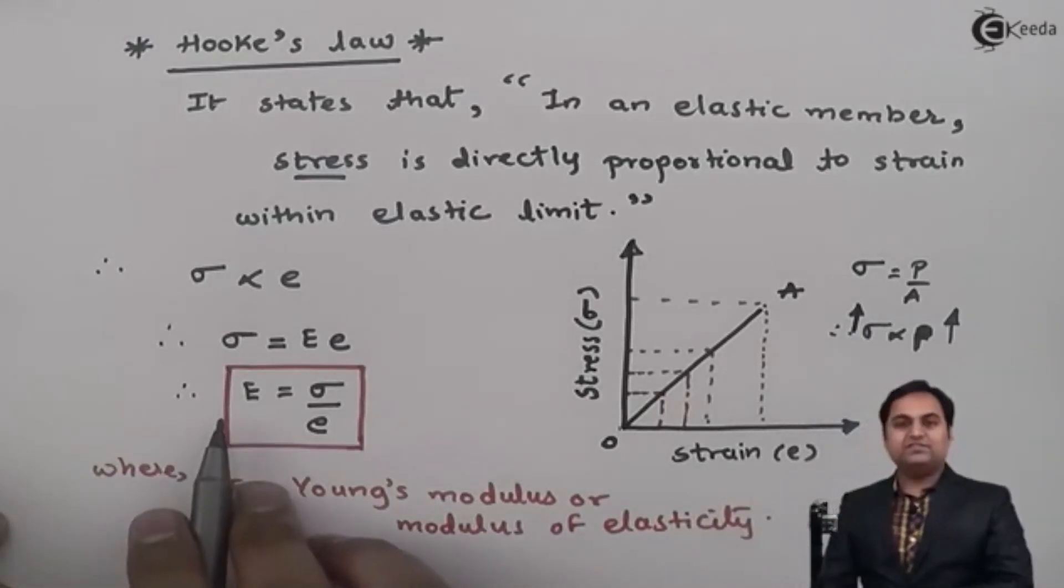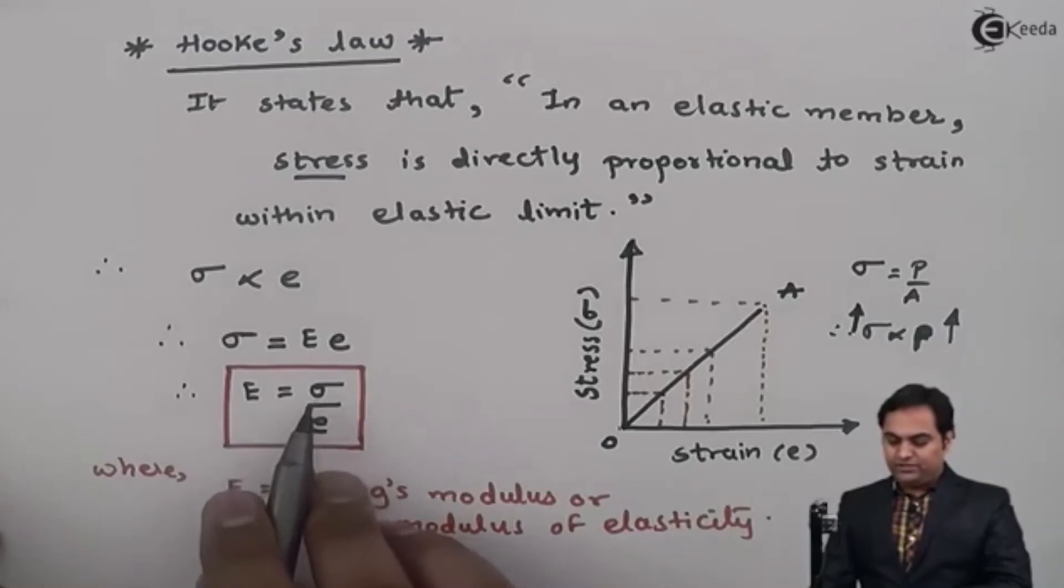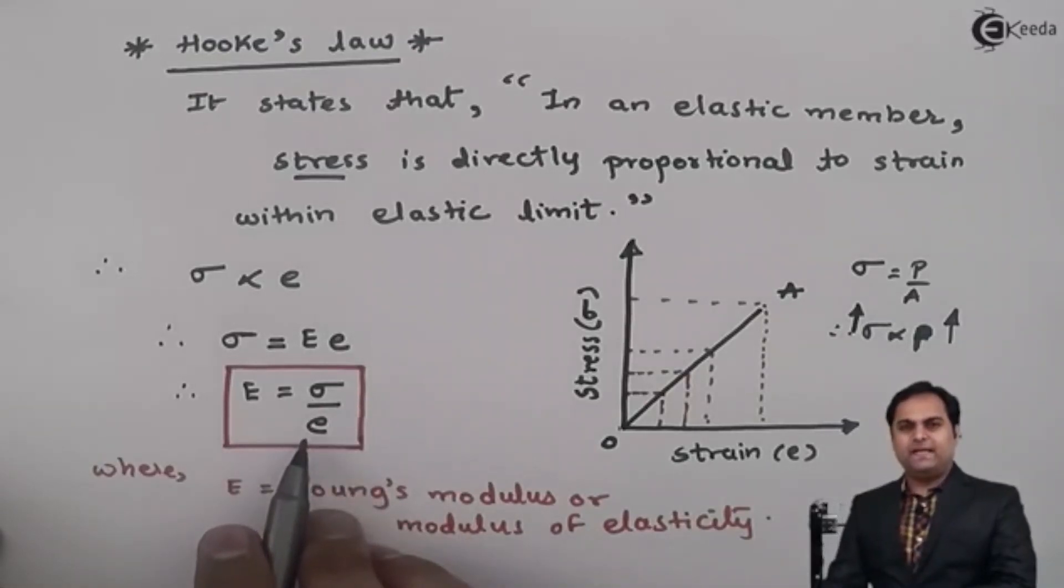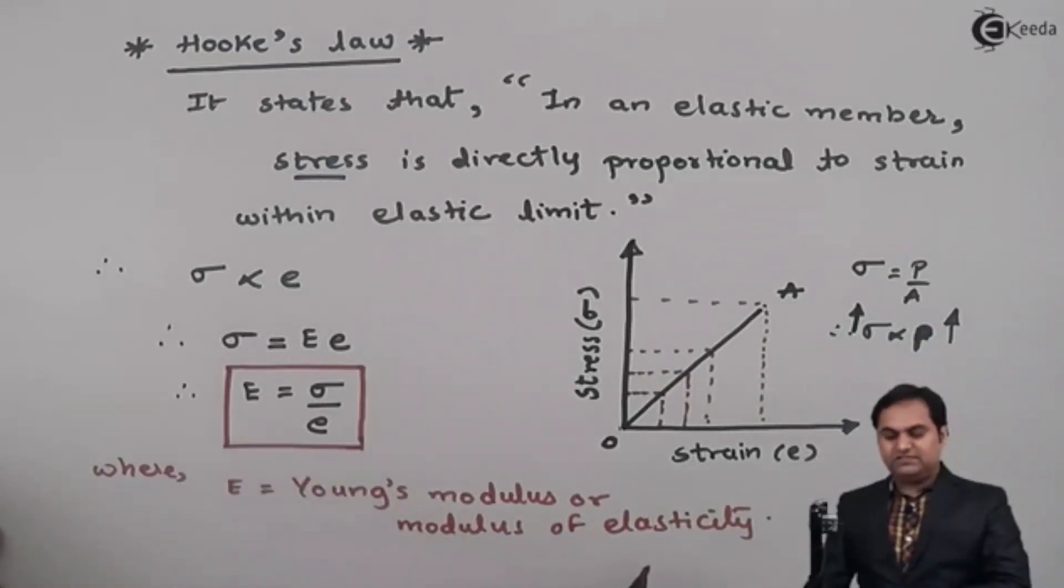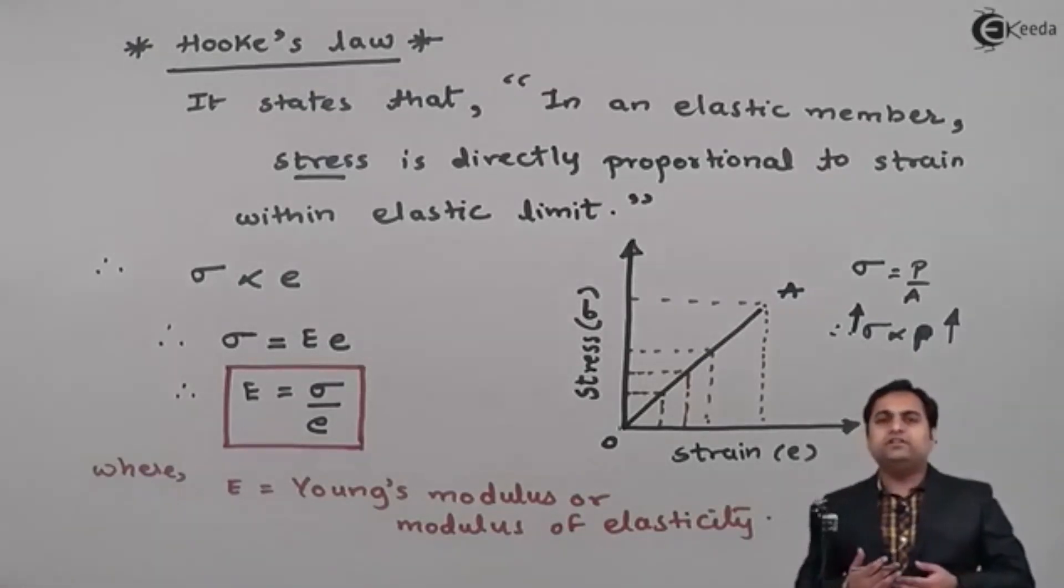And modulus of elasticity is given by the ratio of stress versus strain and this modulus of elasticity will decide how much elastic the material is.